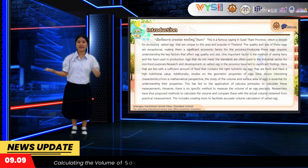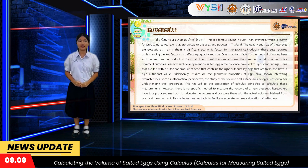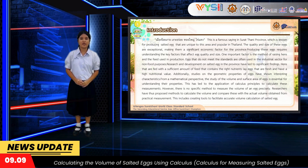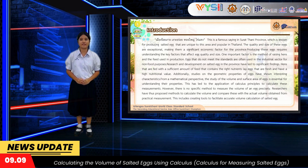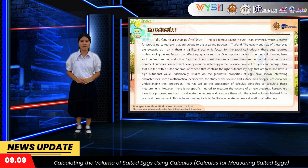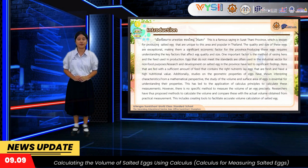I've got more about this in Korea and Thailand. This is the famous semi-inflammatory problems, which is known for producing solid eggs that are unique to this area and popular in Thailand. The quality and size of these eggs are essential, making them a significant economic factor. Producing these eggs requires understanding the key factors that affect quality and size. Researchers have proposed methods to calculate the volume and compare these with the actual volume obtained from practical measurement.